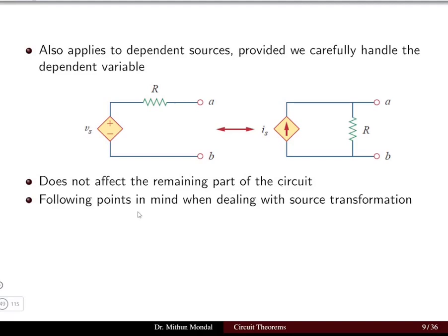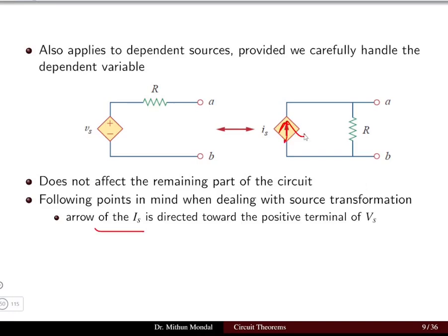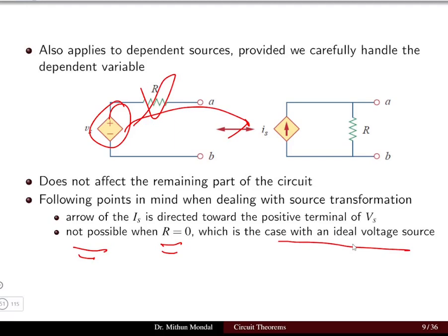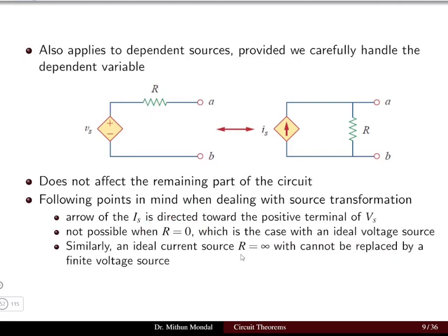Certain points must be kept in mind with source transformation. The arrow of the current source is directed towards the positive terminal of the supply voltage. Source transformation is not possible when R = 0, which is the case of an ideal voltage source. Similarly, if the resistance is infinite, that is an ideal current source. In such cases we cannot apply source transformation, since we need to convert the resistance between series and parallel configurations.